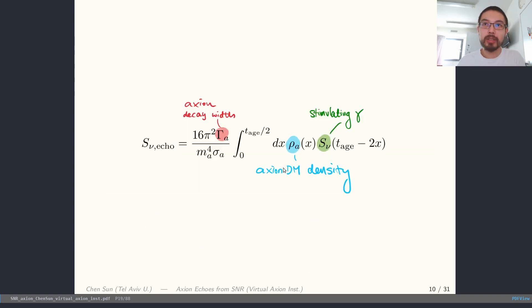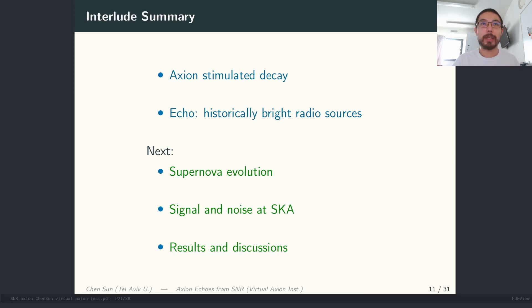And this is the master formula we use. From this, you can see these three components I mentioned earlier: that is the flux density of the radio source, the axion dark matter density, and the decay rate, the spontaneous decay rate which contains the axion-photon coupling. The integration really happens for the history of the radio source. That means that we are stacking up a bunch of images produced by decay at different times. We have talked about the stimulated decay and why for the echo signal the historical brightness of the radio source matters. Next, let's look at the supernova evolution because now we need to model the time evolution of the radio source. Then, I'll show you quickly how to convert the flux density to the signal-to-noise ratio that's detectable at SKA. In the end, I'll show you the results with some discussions.